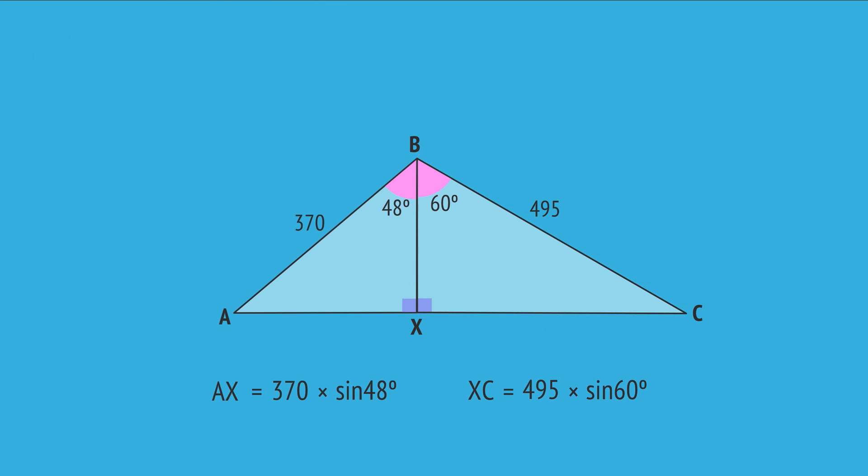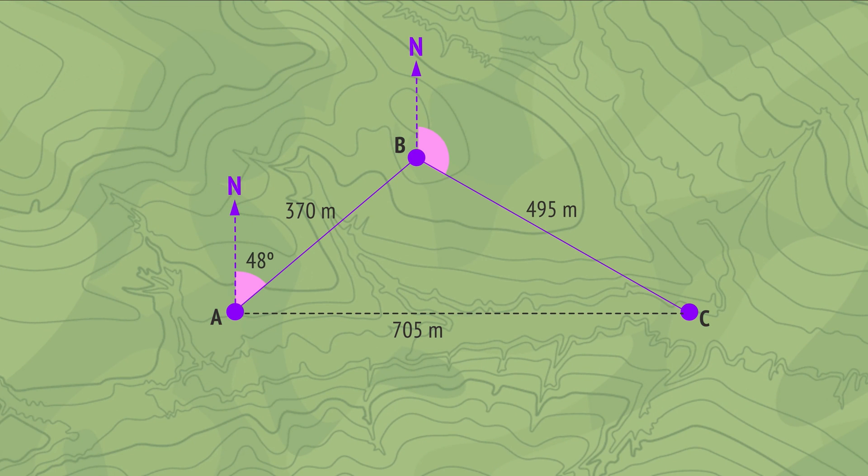Rearranging for the unknown values, and using a calculator, gives AX equals 275 and XC equals 430. And adding these together gives the required distance AC equals 705. And so point C is 705 meters due east of the starting point A.